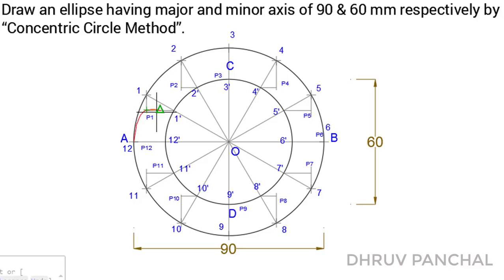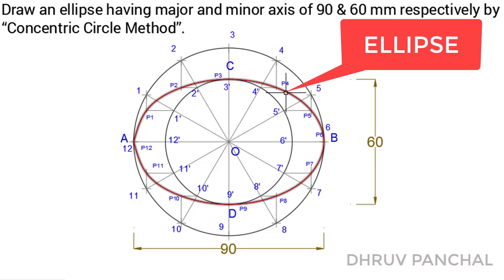Now, with the help of French curve, draw a smooth curve passing through all the derived points. This smooth curve is known as ellipse. I hope you understood it, and if you have questions, let me know.